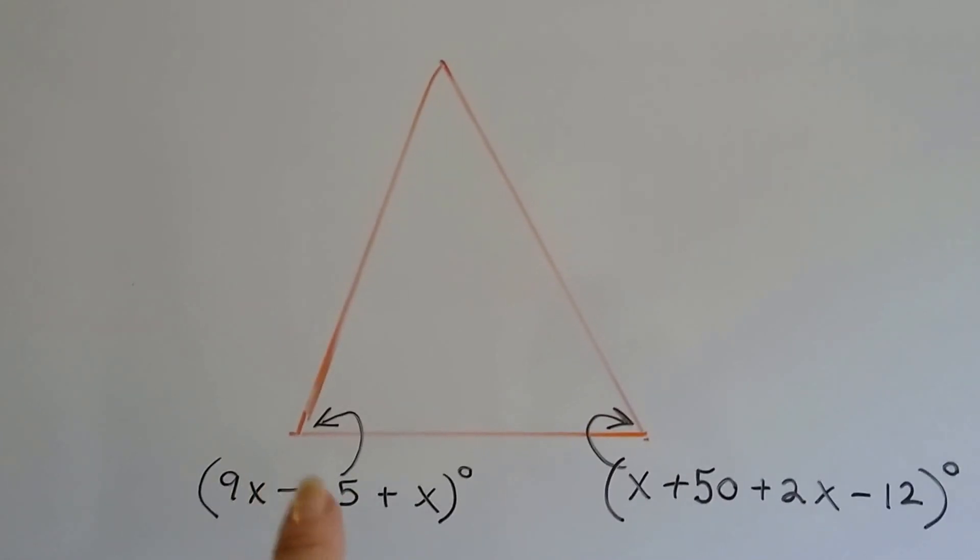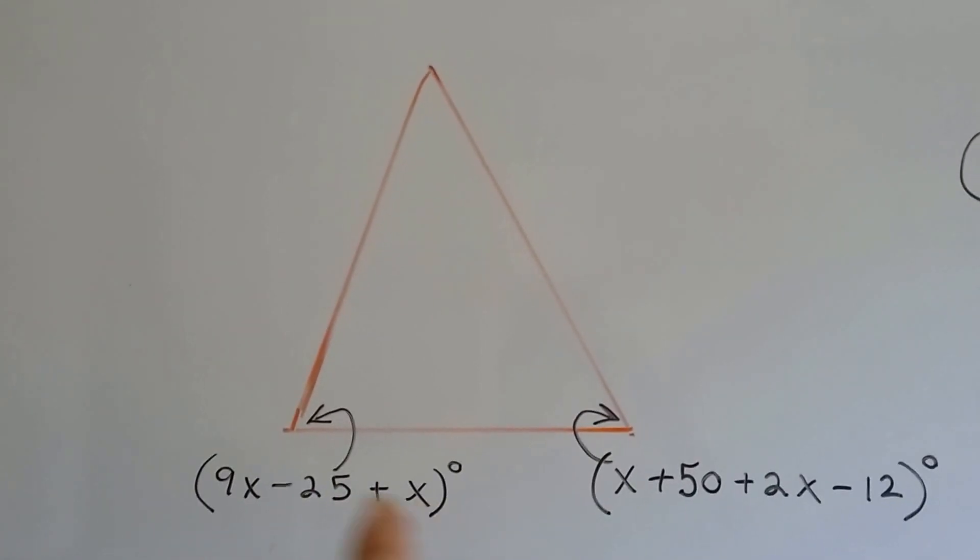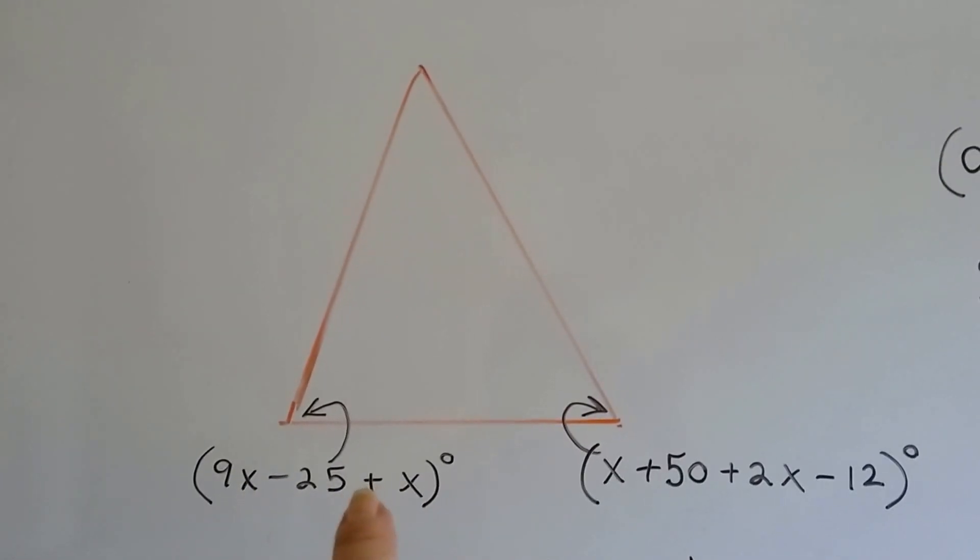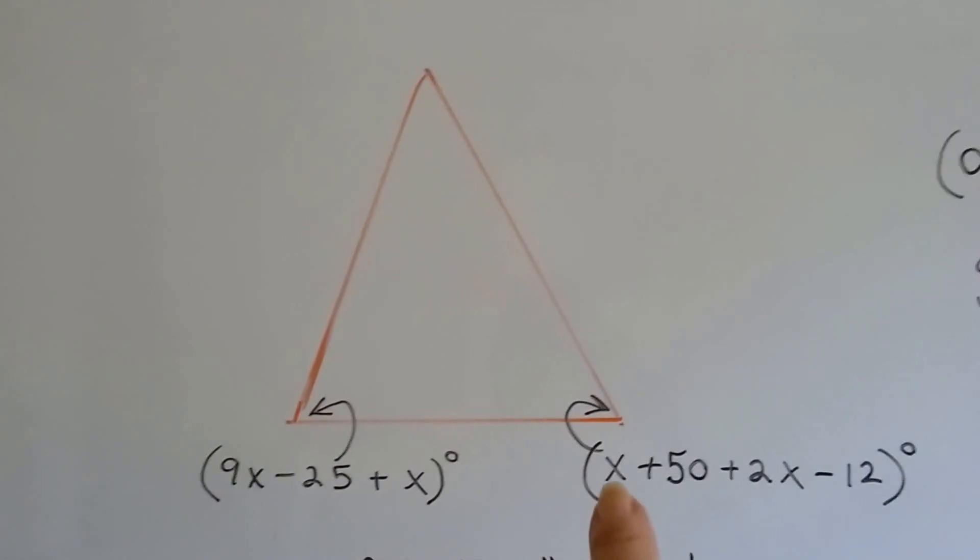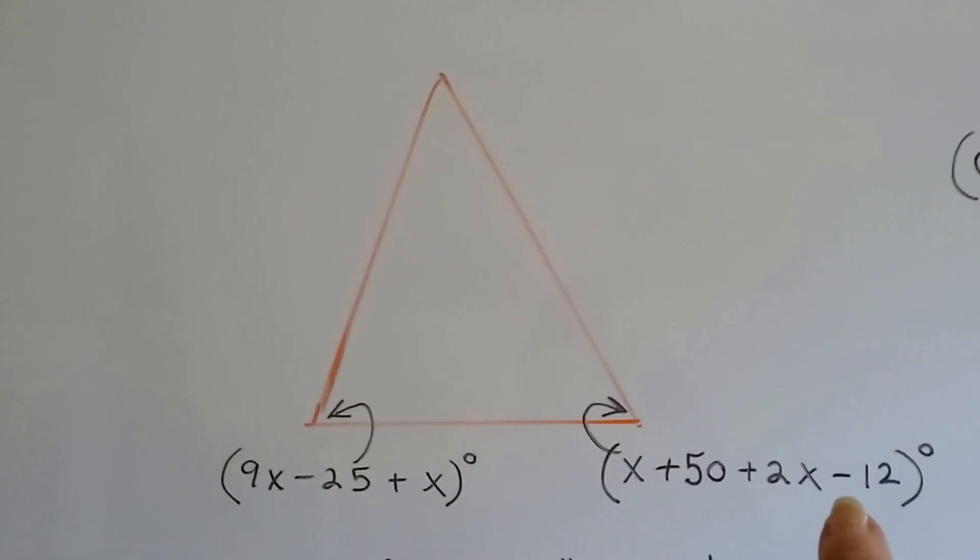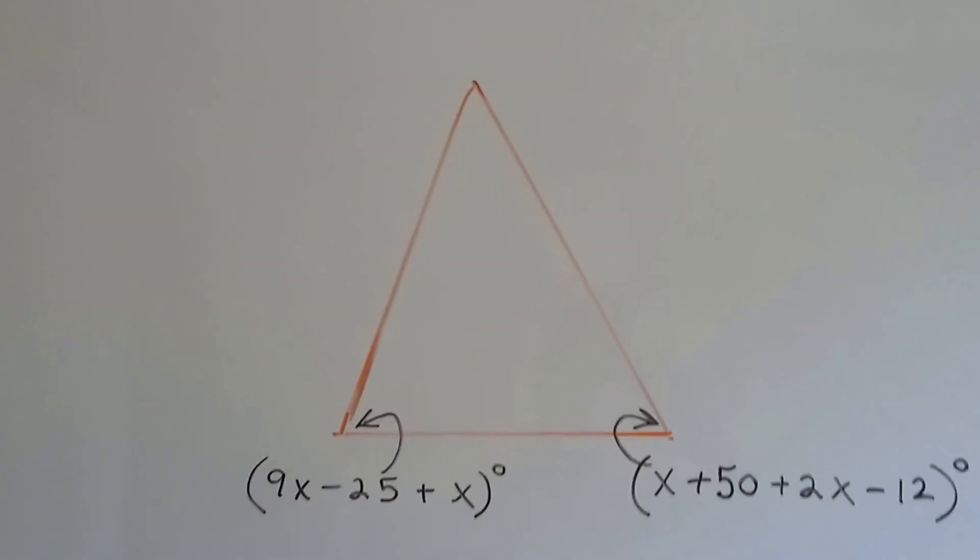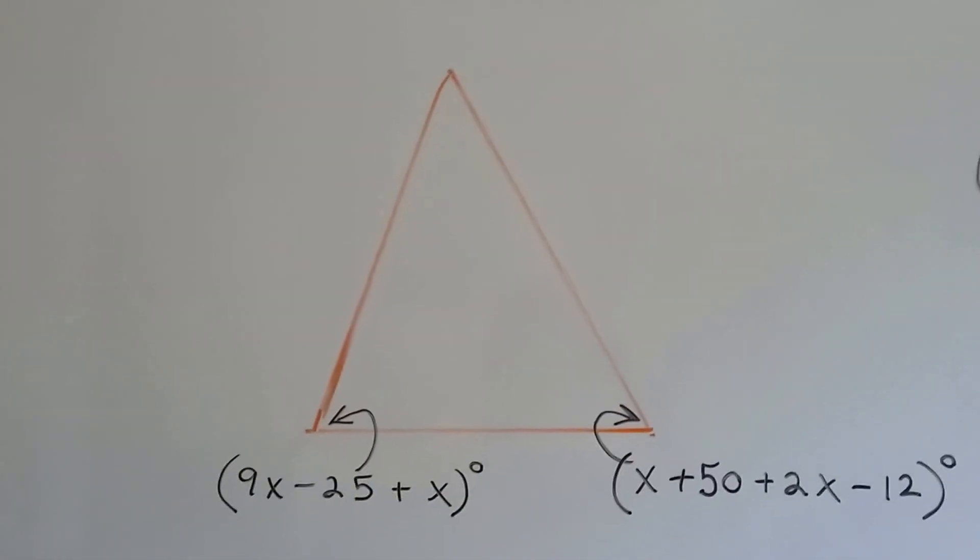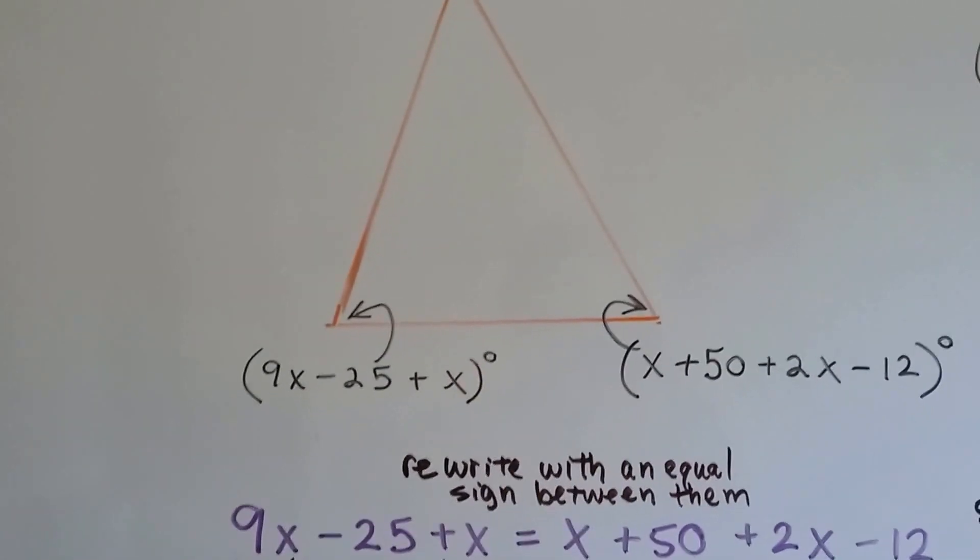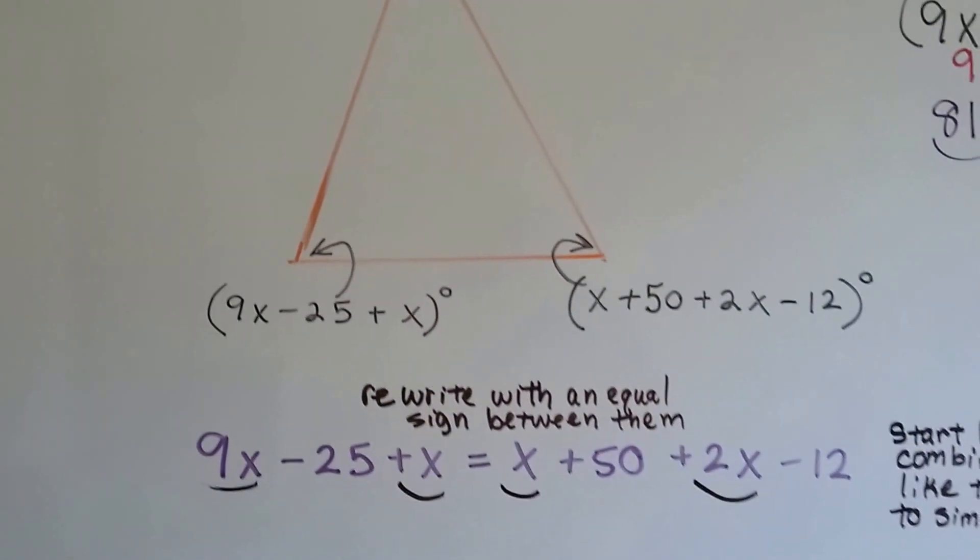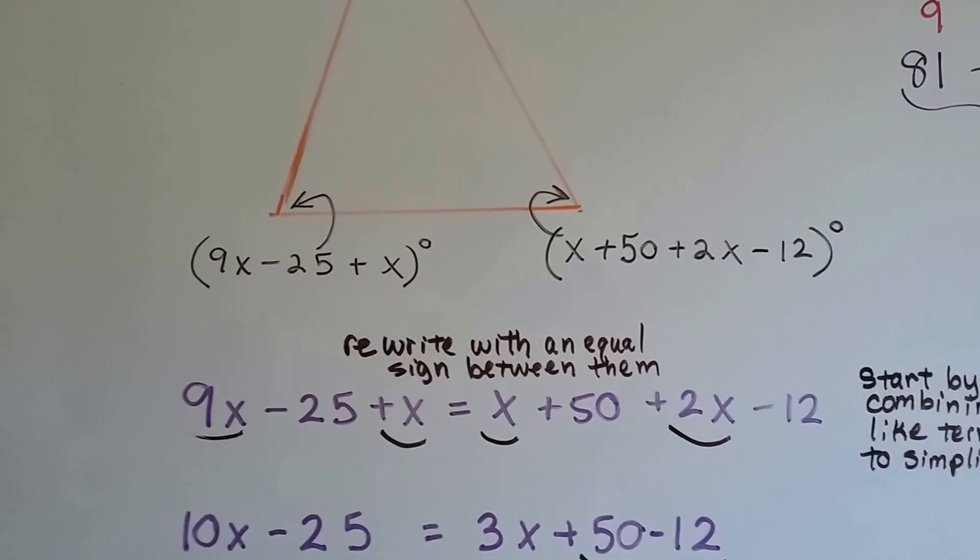So here's our drawing, and it tells us that this angle is 9x minus 25 plus x degrees, and this angle is x plus 50 plus 2x minus 12 degrees. We want to find out if they're equal. So we rewrite it with an equal sign in between them, and we start combining the like terms to simplify it.